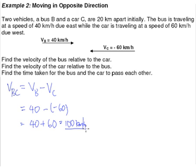This is not to say that either of the vehicles are traveling at a speed of 100 kilometers per hour. It simply means that if you are in the car and you are moving towards the bus, and the bus is moving towards you, you will be seeing the bus traveling towards you at a relative speed of 100 kilometers per hour.